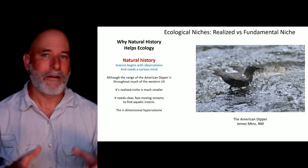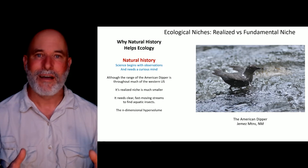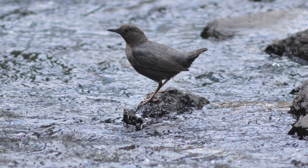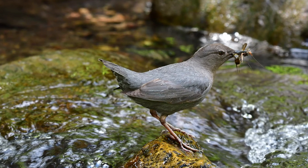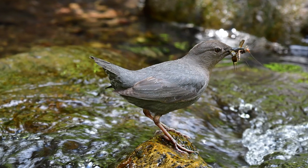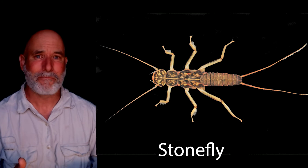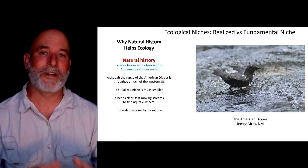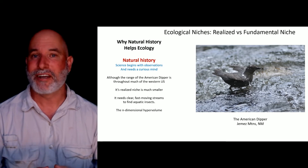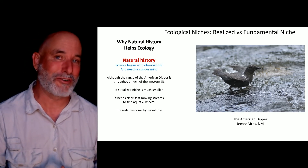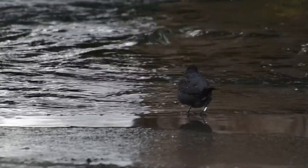Once again, the fundamental niche of a cypress tree is much larger than its realized niche — reduced by competition. Another example: the American Dipper is found throughout the entire American west, but its realized niche is much smaller because part of its n-dimensional hypervolume requires clear, fast-moving rocky streams where it can forage for aquatic insect larvae, specifically stonefly larvae. Its realized niche is based on predation interactions — who it is eating — since it can't forage in the air or glean insects from trees.